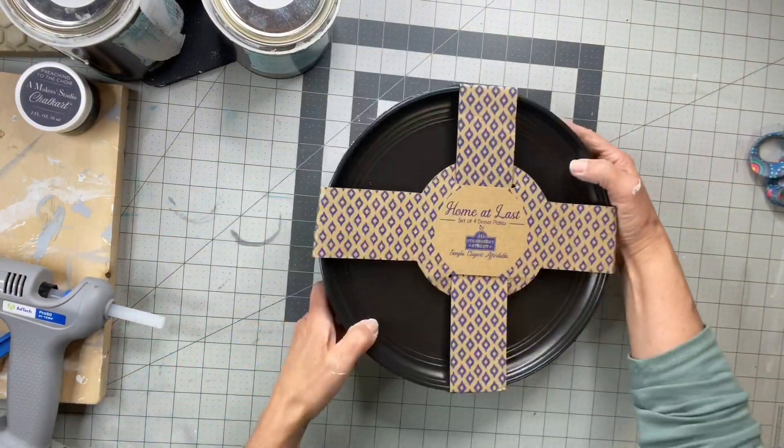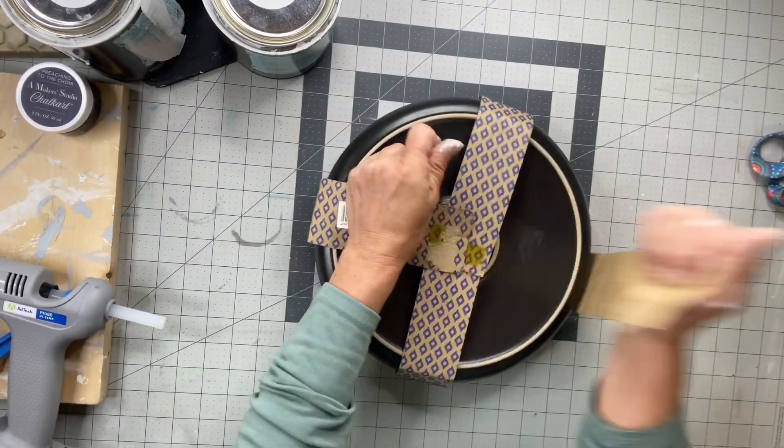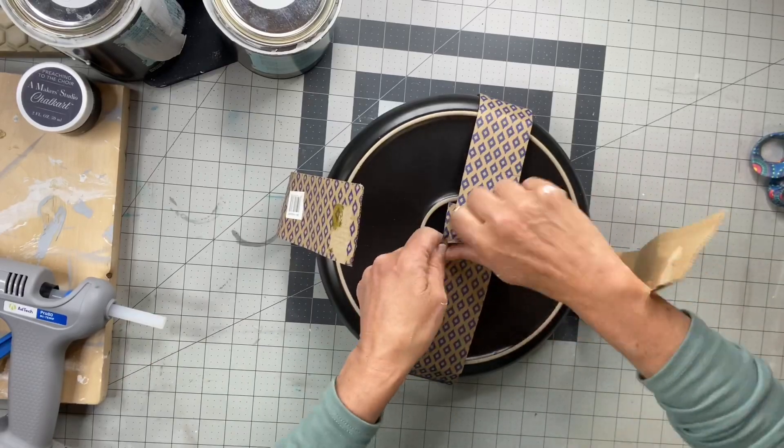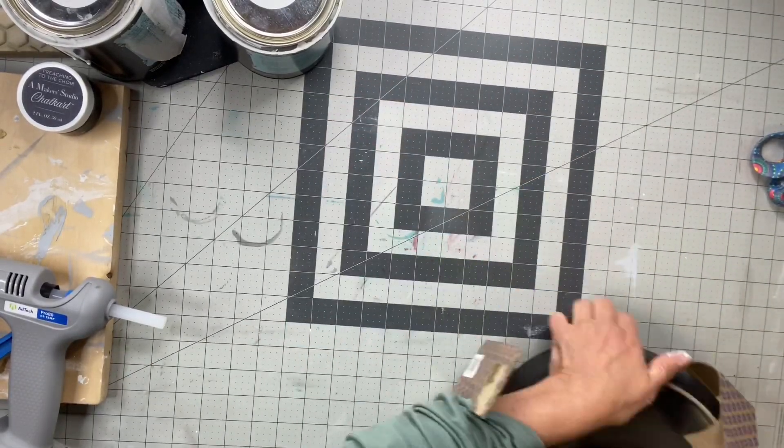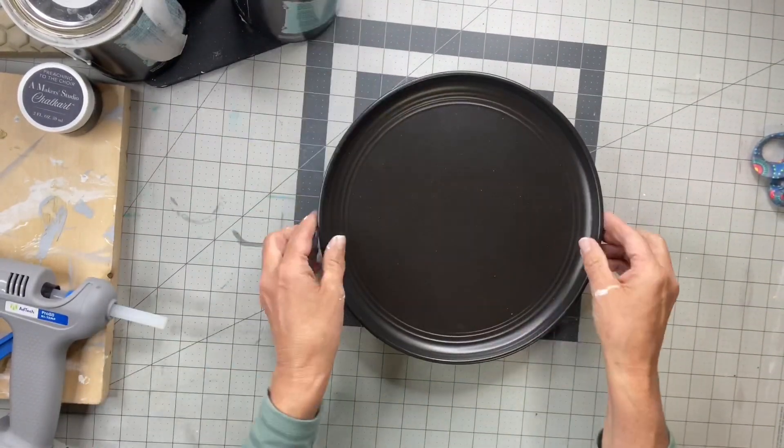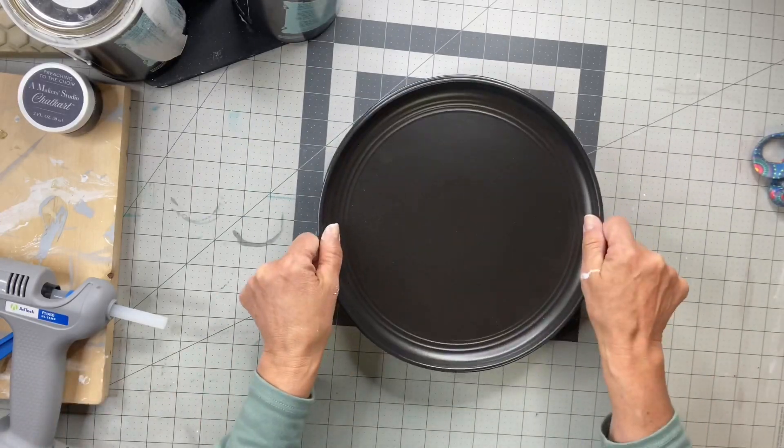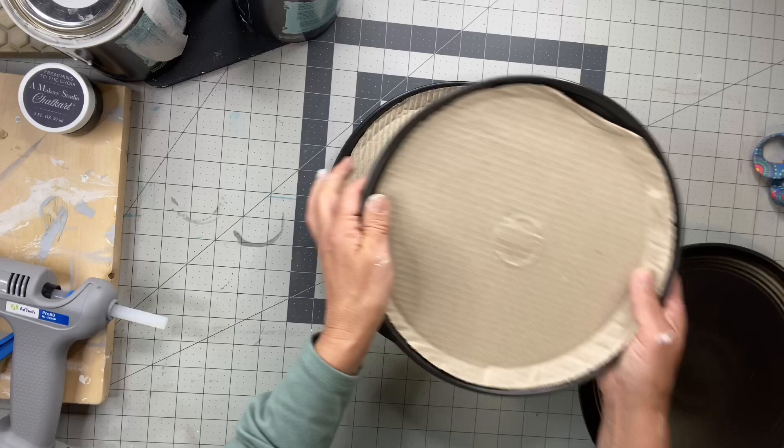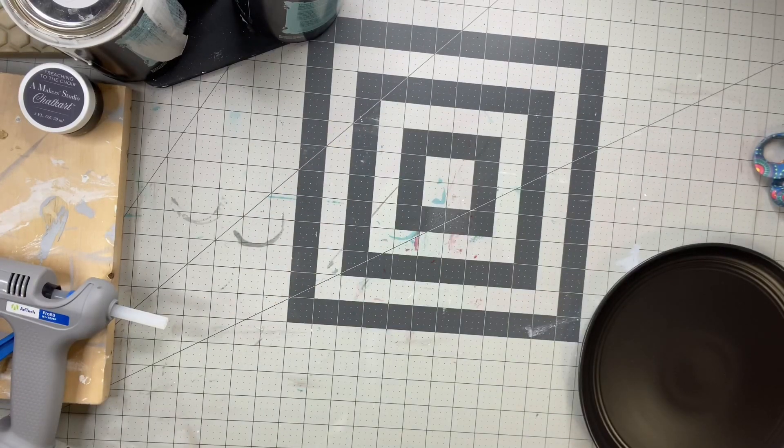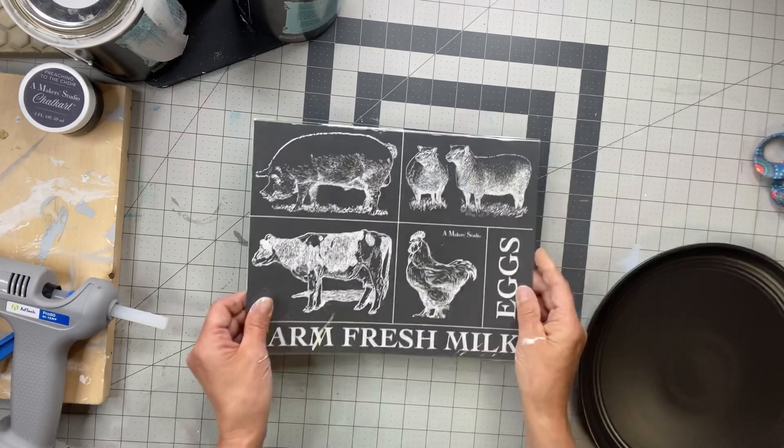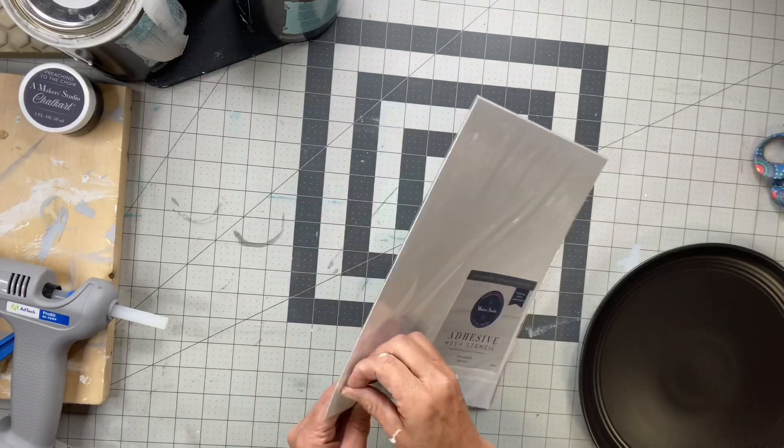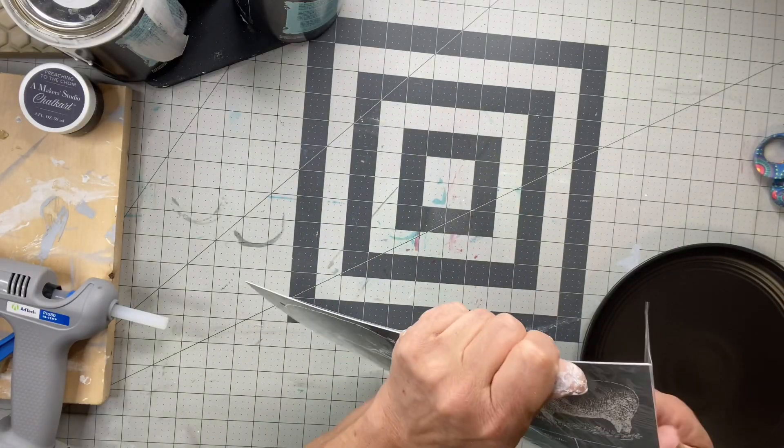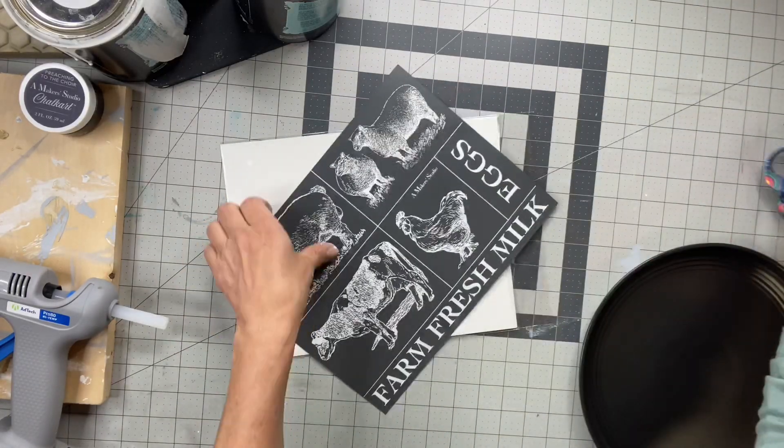I picked up these four plates at Big Lots for $10. They're just black ceramic, regular sized dinner plates, and we're going to be using our farm stencil, the mesh stencil from Maker Studio.